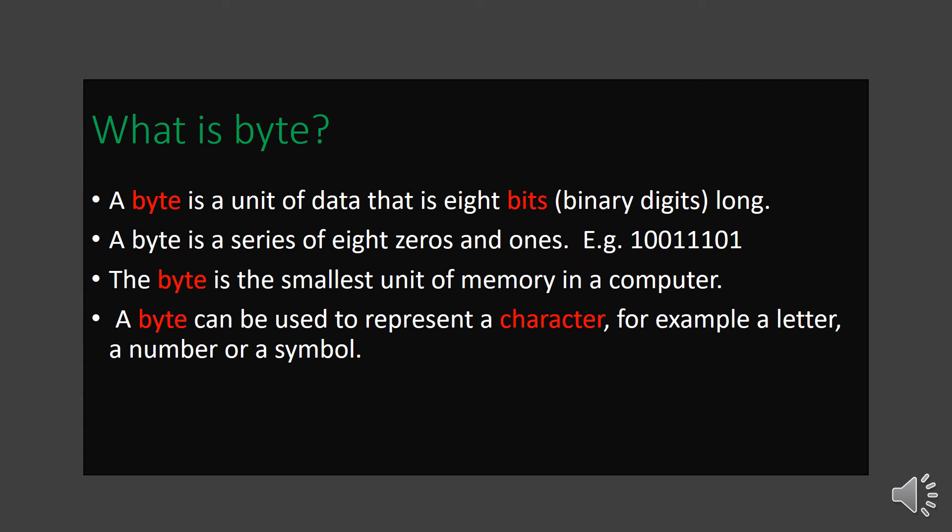What is a byte? A byte is a unit of data which has 8 bits in it. Bits are either 0 or 1 — binary digits. The word 'bits' comes from the first two letters of 'binary' — BI — and the last two letters of 'digits' — TS — giving 'bits'. The digits 0 or 1 are used to store information in the computer, which is why the computer is called a digital storage device.